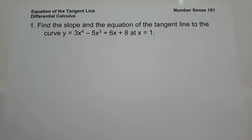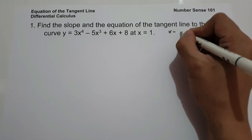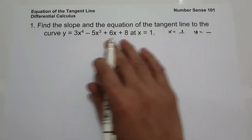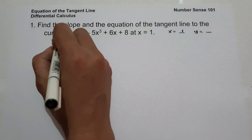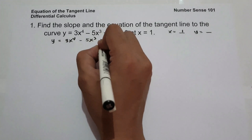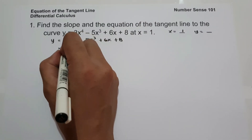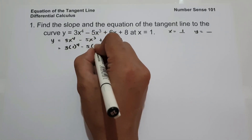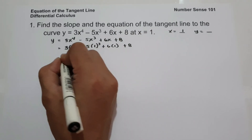To find the slope and the equation of the tangent line, we need to identify the value of x and y. Since x is 1, we are going to find y using the value of x in this equation. So let us have y equals 3x raised to 4 minus 5x cubed plus 6x plus 8, and substitute the value of x: 3 times 1 raised to 4 minus 5 times 1 raised to 3 plus 6 times 1 plus 8.